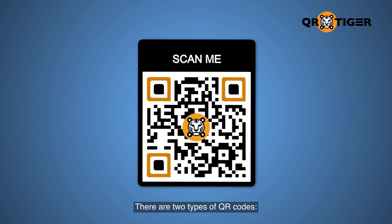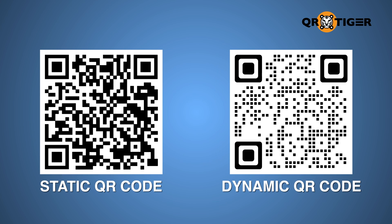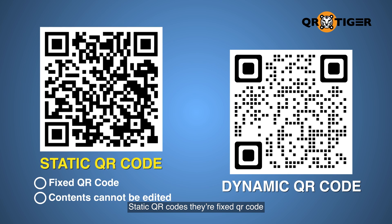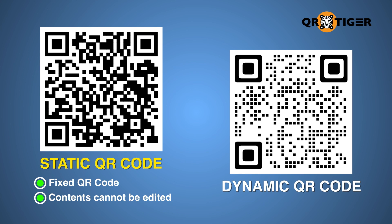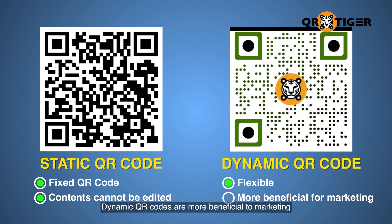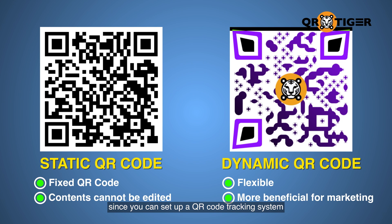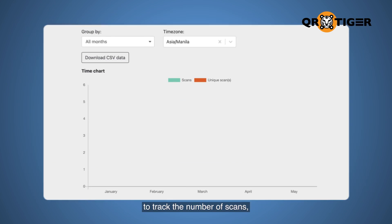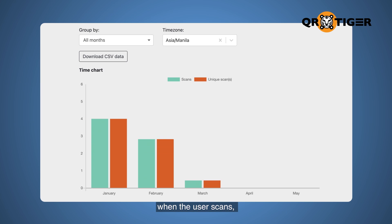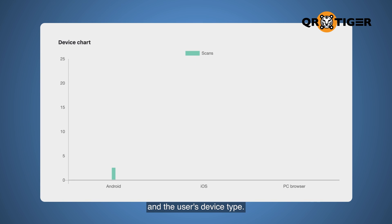There are two types of QR codes: static and dynamic. Static QR codes are fixed and their contents cannot be edited. Dynamic QR codes, on the other hand, are the flexible type. Dynamic QR codes are more beneficial for marketing since you can set up a QR code tracking system to track the number of scans, the location where they scan, and the user's device type.